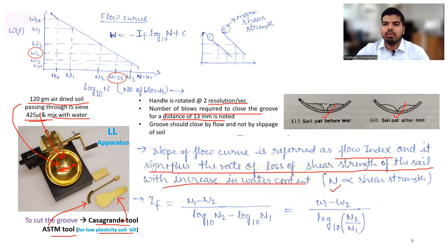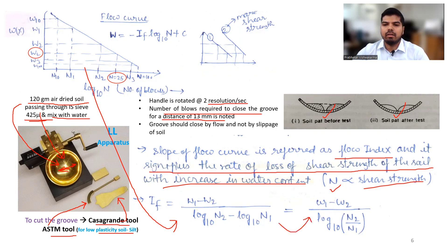The slope of the flow line is referred to as the flow index, which signifies the rate of loss of shear strength of soil with increase in water content. The number of blows is directly proportional to shear strength. The flow index is equal to (W1 − W2) / (log₁₀ N2 − log₁₀ N1). Once we have the flow line, we choose 25 number of blows, and the corresponding water content gives the liquid limit.